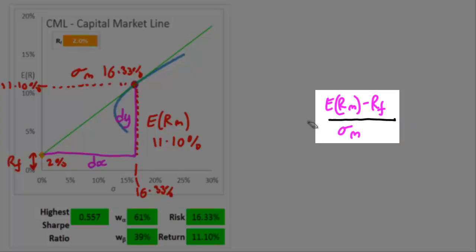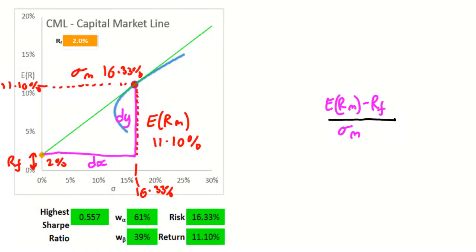This equation is the market price of risk or going from the video on defining the capital market curve it's the sharp ratio of the market. Go watch that video.